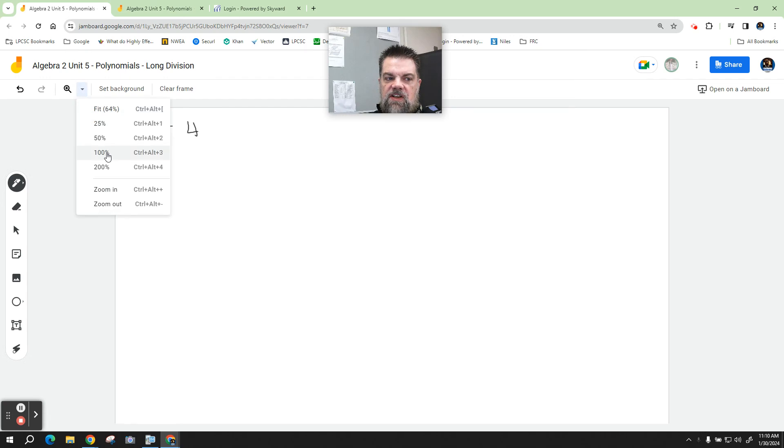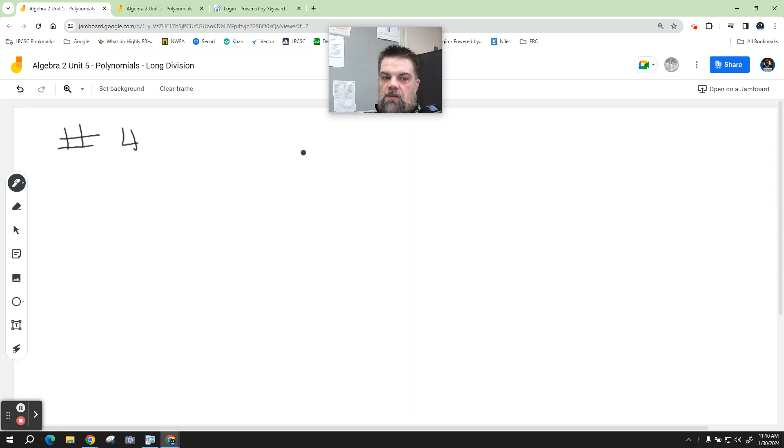I'll post the links in Canvas so you guys can look at them if you need help. So we're going to take 3r and divide that into 3r cubed. This is problem number four.